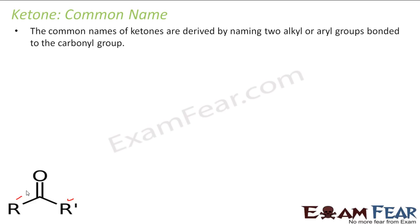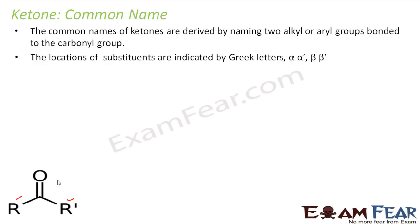I'll take some examples. If you have some substituents, then we use alpha, alpha-dash, beta, beta-dash notation. For example, on the left side you start with alpha, beta, and on the right side alpha-dash, beta-dash. You can take either side — it doesn't matter.